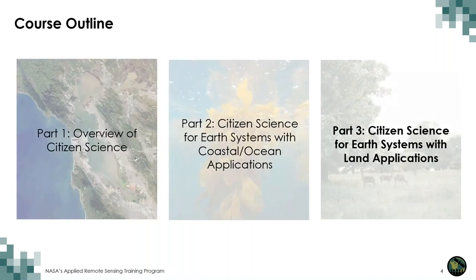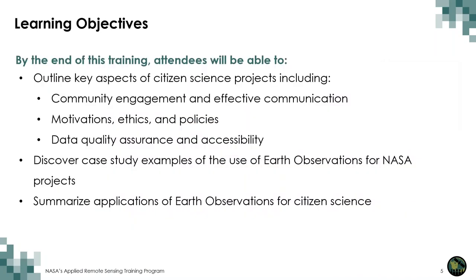Here's the course outline, and we're really excited for part three today to discuss land applications of citizen science and earth observations. By the end of this training, we hope you will all be able to outline key aspects of citizen science projects, including community engagement and motivations, ethics and policies, data quality assurance and accessibility, and also be able to summarize some applications of earth observations for citizen science, in particular through the highlighted projects.